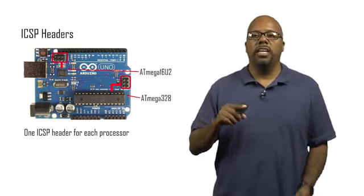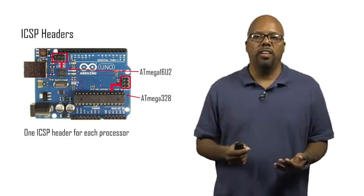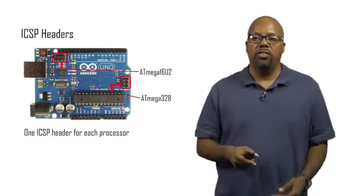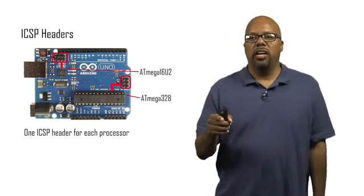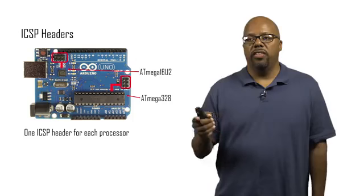And if you want to program either one of those two, you have to use their ICSP ports, their ICSP headers. So there's one ICSP header right near the Atmega16U2, and there's another ICSP header for the Atmega328.